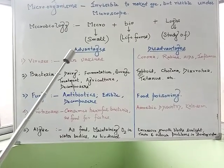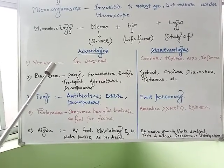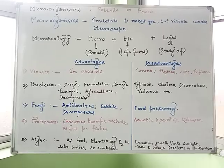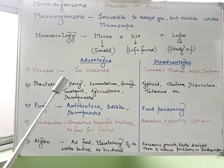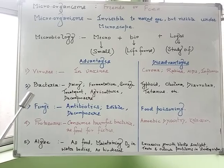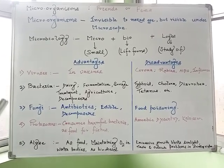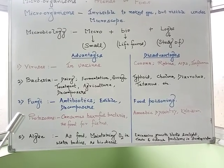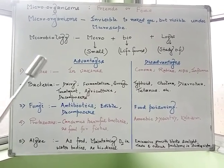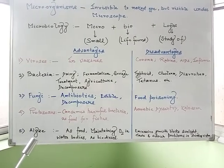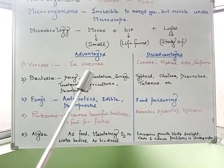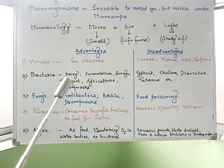We will now take a look at the different types of microscopic life forms one by one. Microorganisms include viruses as well as single-celled life forms like bacteria, fungi, protozoans, and algae. Each of these groups of microscopic life forms may have some harmful impact as well as some useful impact upon us.